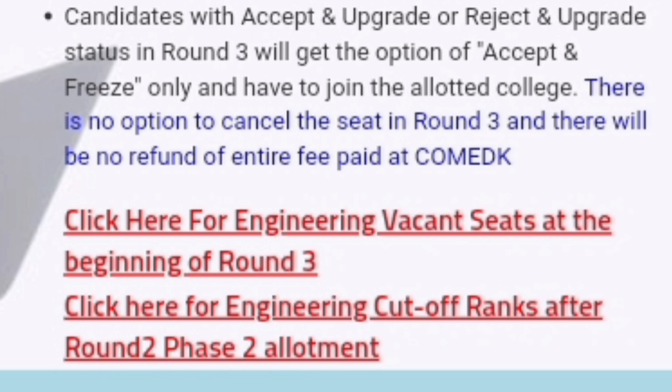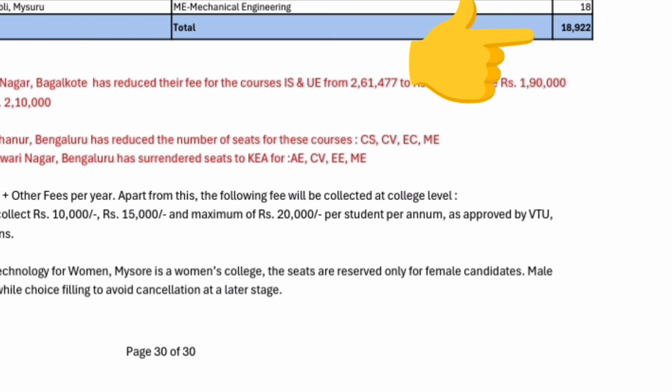If you click on the engineering vacant seat matrix, on page number 30 it clearly shows that total seats available for Round 3 is 18,922. This is actually most of the seats from COMEDK Round 2 that have been returned, so this is basically good news for people who are still trying in Round 3 — they can definitely get a very good seat.